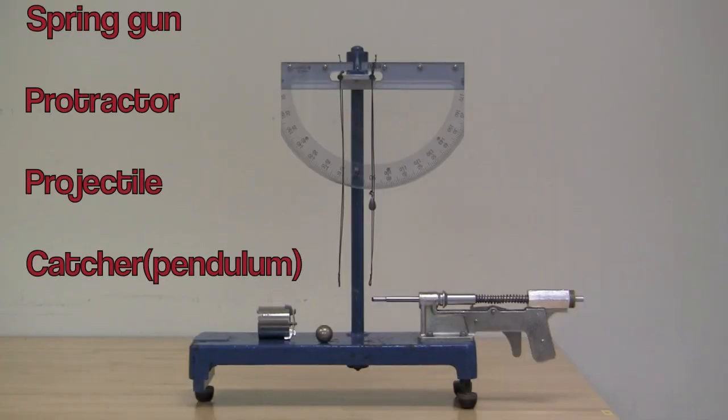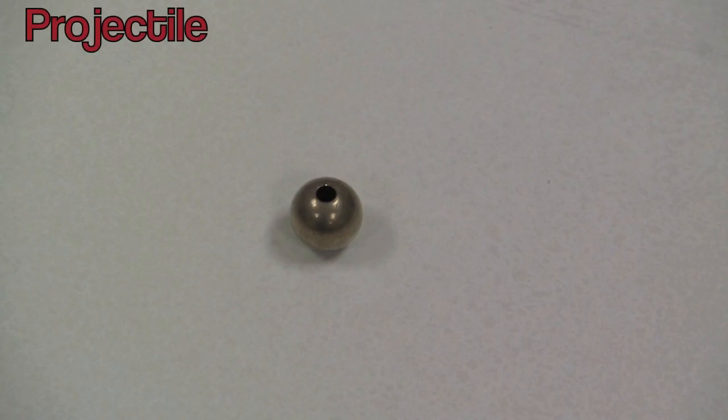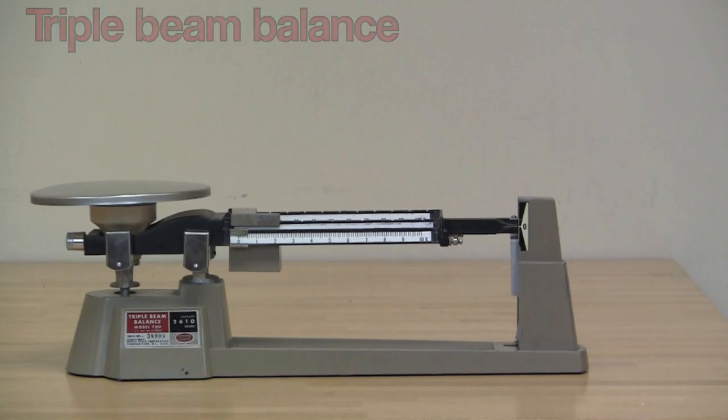You will be using a spring gun assembly. The spring gun shoots the ball into the pendulum catcher. You'll also use a triple beam balance.